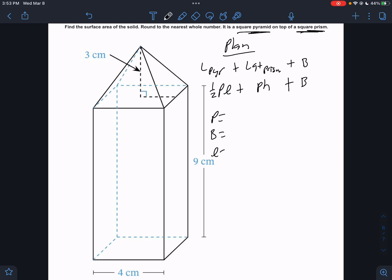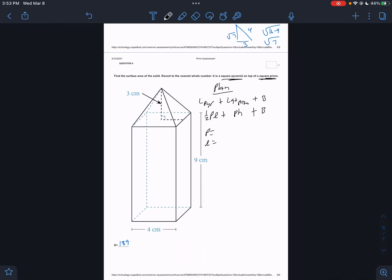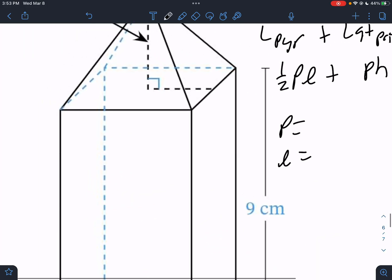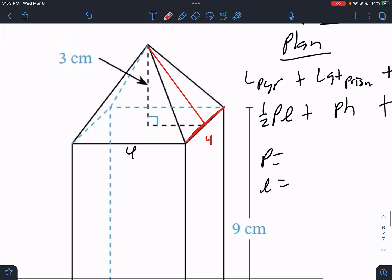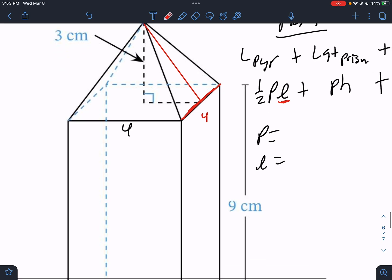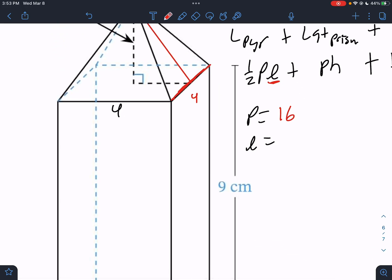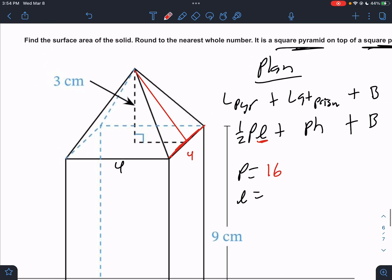Actually, I'll keep it separate because I don't want to get too confused. So for the first part, it's P and L. Those are the things we need. So we know that the base is a square. So this would be 4. This side would be 4 as well. But we need this number right here. We need L, that slant height. We know the perimeter is going to be 4 times 4. Perimeter is going to be 16. We got that. But we need that L.